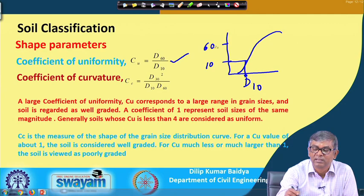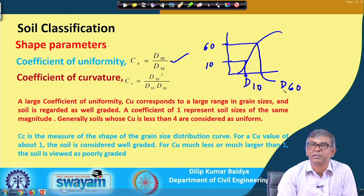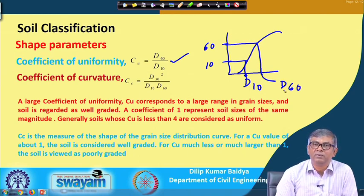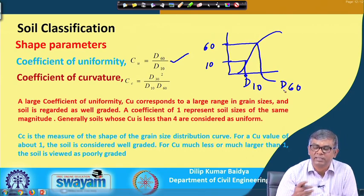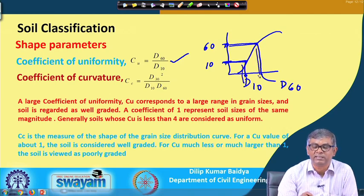On the grain size distribution curve, at 10 percent finer, you draw a horizontal line to the curve and then drop down to the x-axis — that gives D10. Similarly, at 60 percent finer, you produce on the curve and come to the x-axis — that is D60. From the grain size distribution curve, you find D10 and D60 by locating 10 percent and 60 percent finer values.